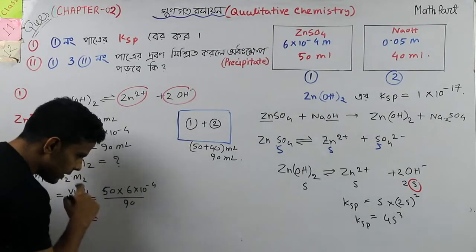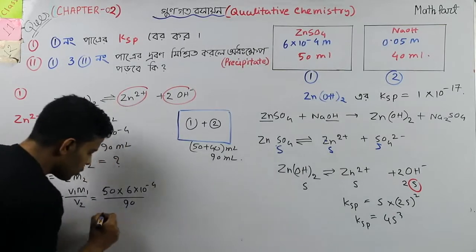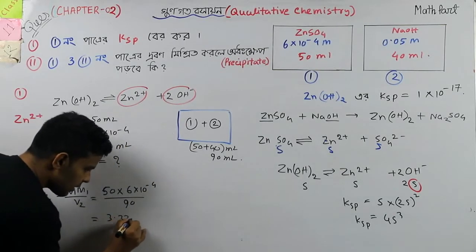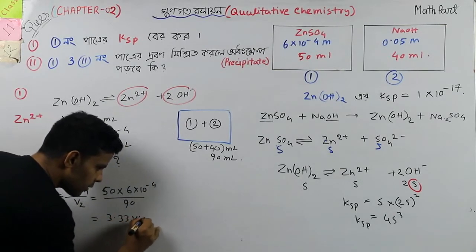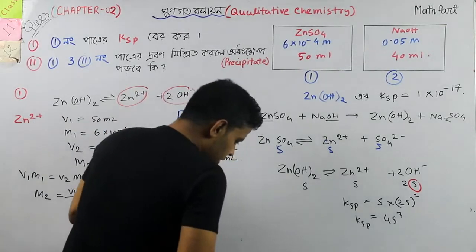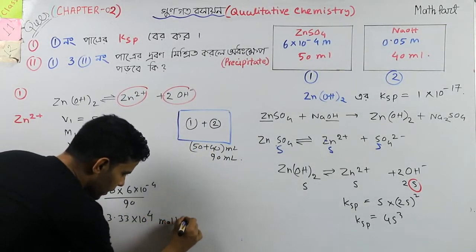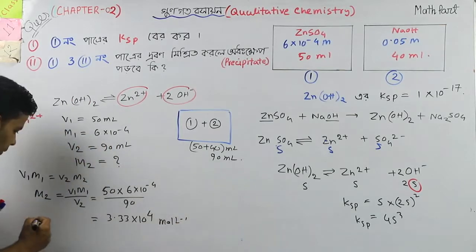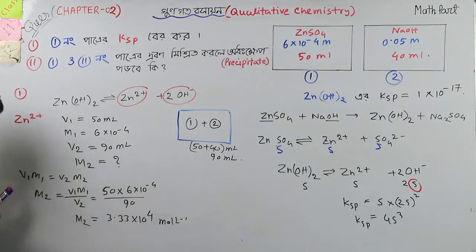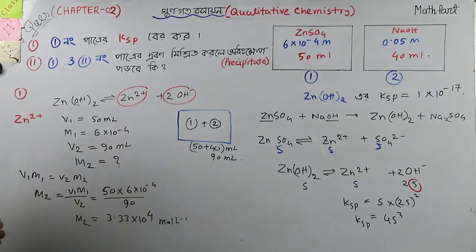So we calculate it and go to the zinc concentration. 3 to the power minus 4. That's the value. M2 means zinc 2 plus. That means the measure of zinc 2 plus is found. The measure is a result. We have to work with the other OH ion.